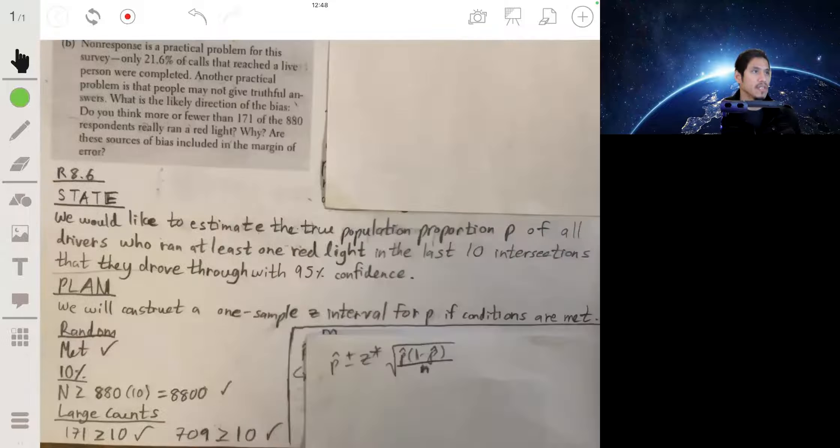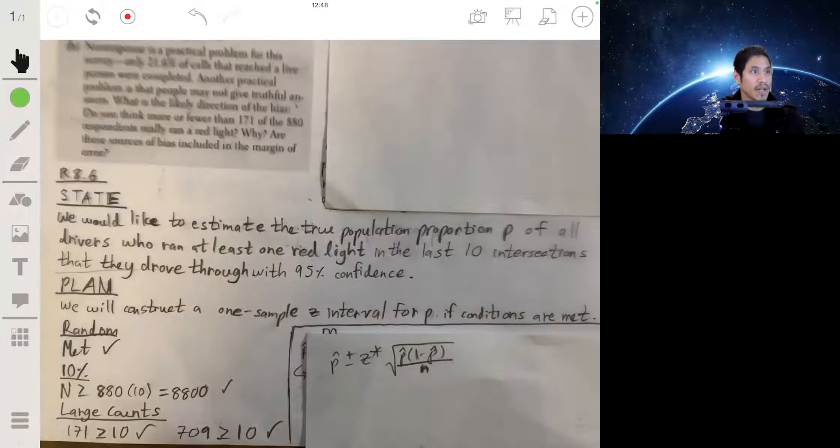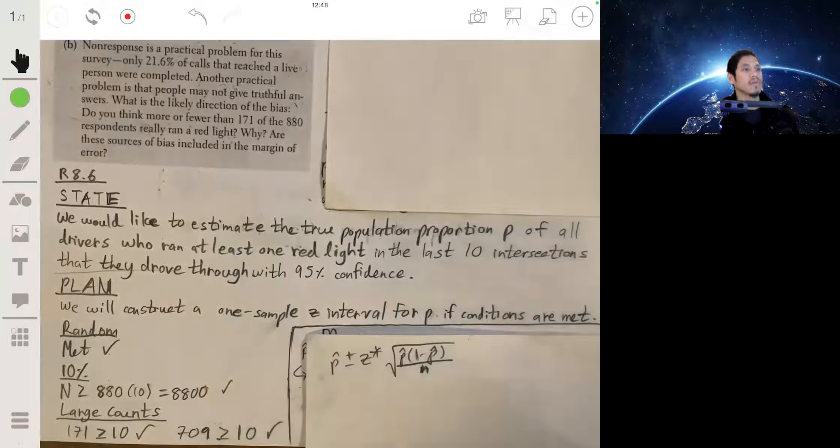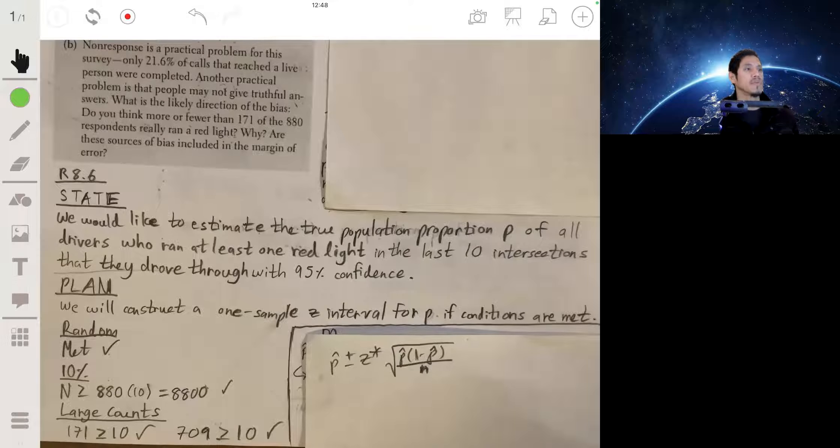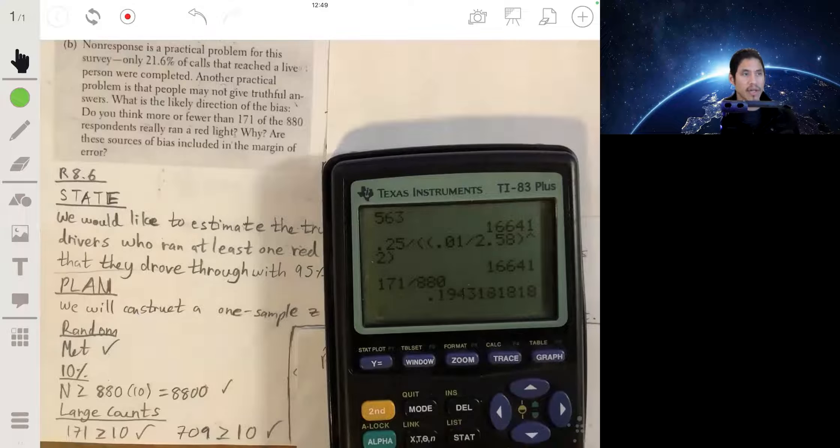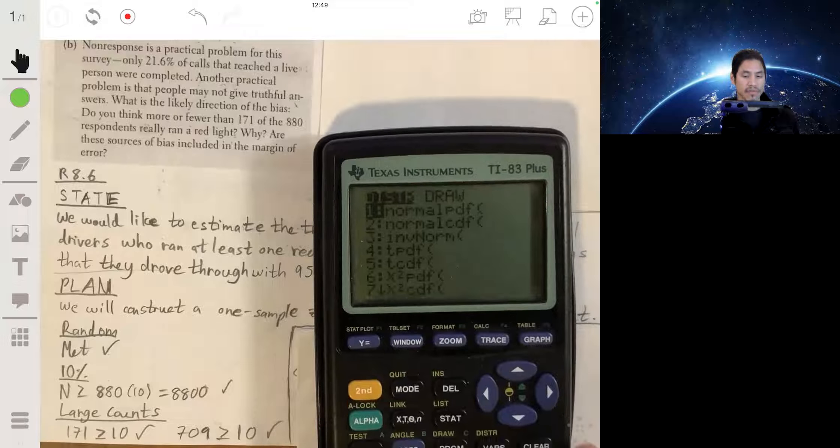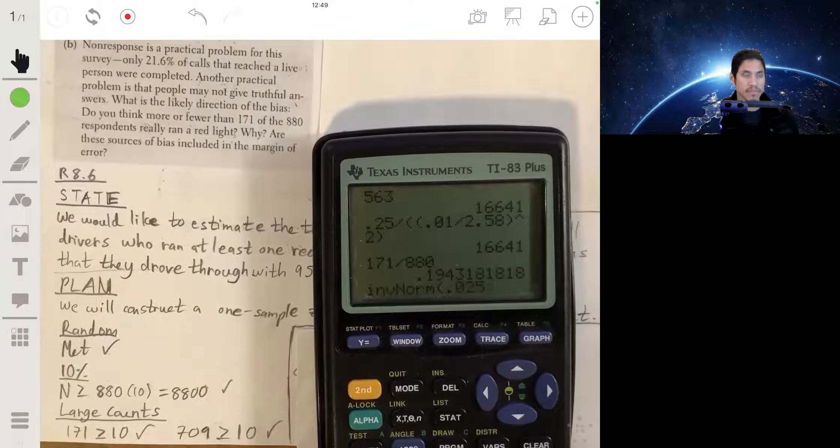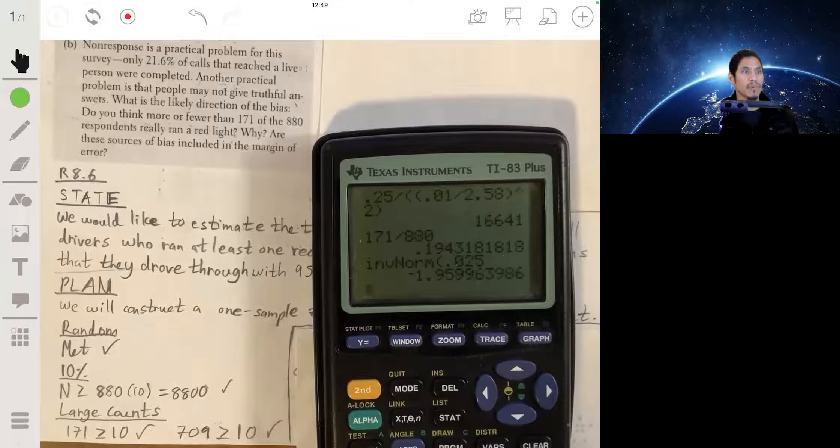Our z star: we're trying to construct a 95% confidence interval, so we look for the critical value where there's two and a half percent to each side of it. We can just go to our function inverse norm 0.025, and that'll be 1.96.